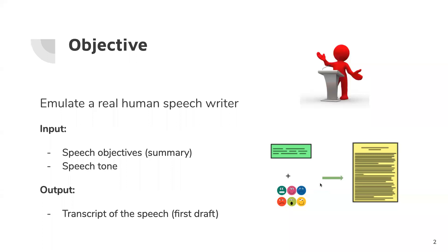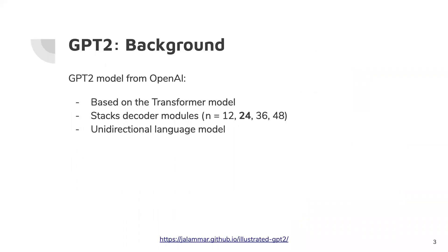By that, we mean that we want to emulate a real human speechwriter. For example, a public figure could provide a set of desired objectives for a speech, along with the emotion they wish to convey, and their speechwriter could write a first draft of a transcript for them to review and possibly use.